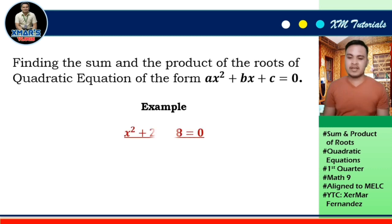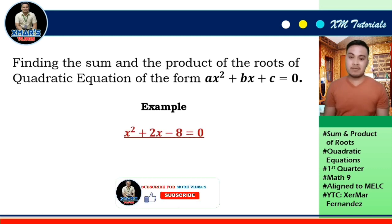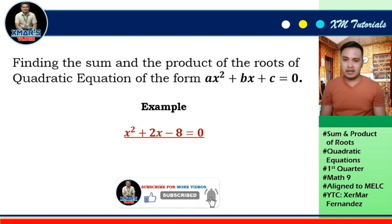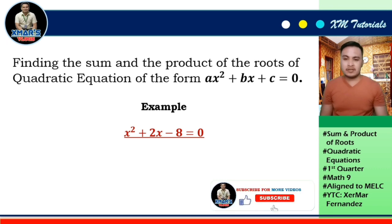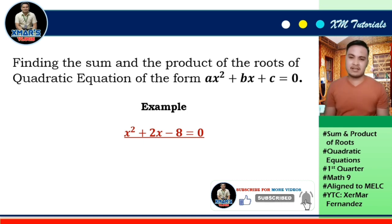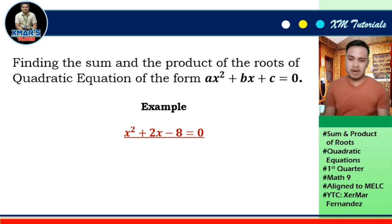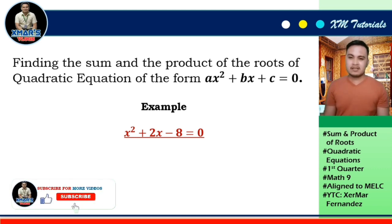For example, we have x² + 2x - 8 = 0, and we will find the sum and the product of its roots. Since we are beginners with this lesson, the first thing we will do is solve for the roots. To solve for the roots of a quadratic equation, we will apply methods like factoring, completing the square, and using the quadratic formula. Here, I will be using factoring.